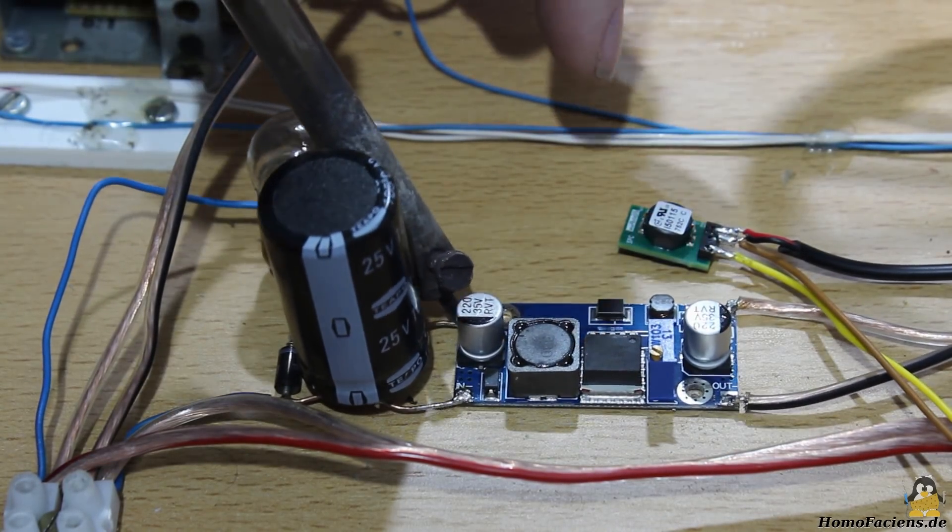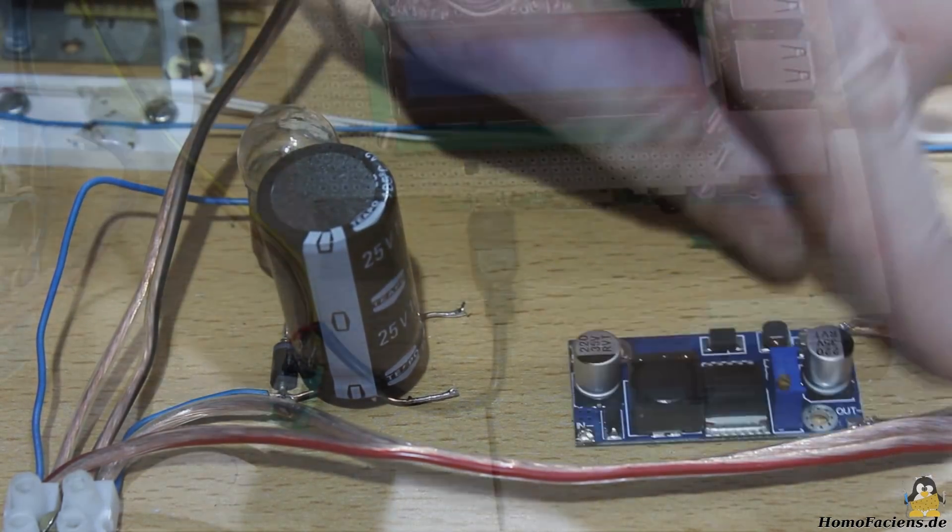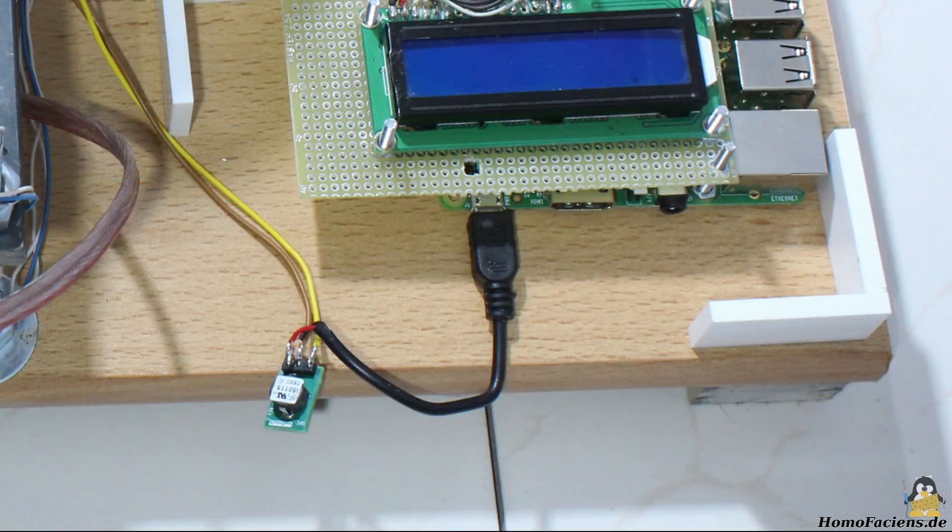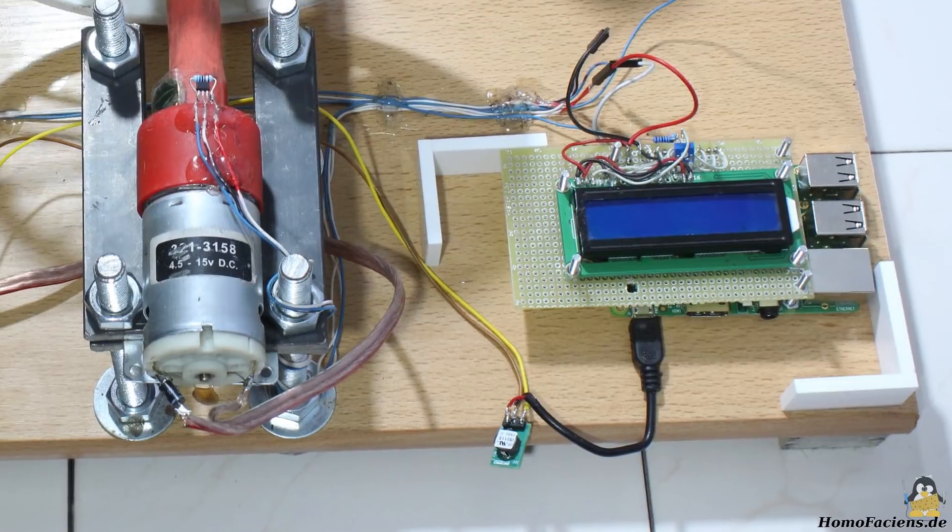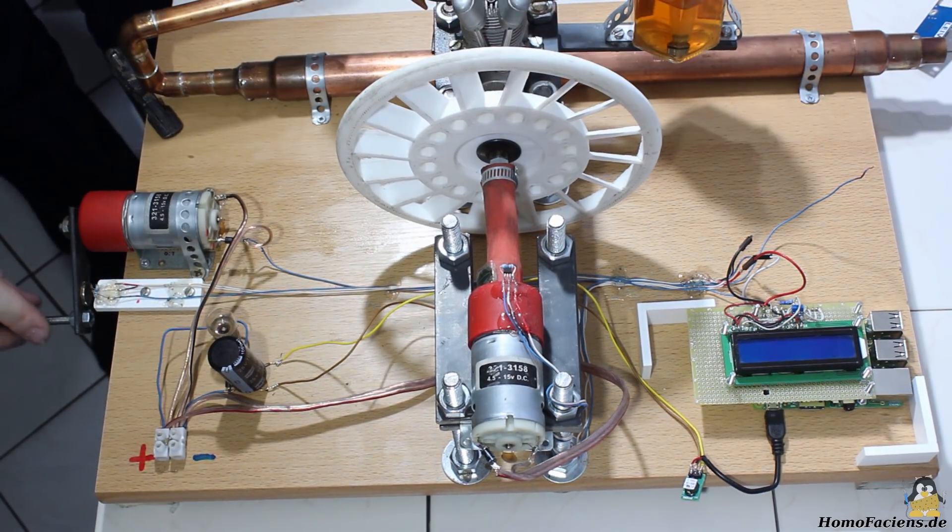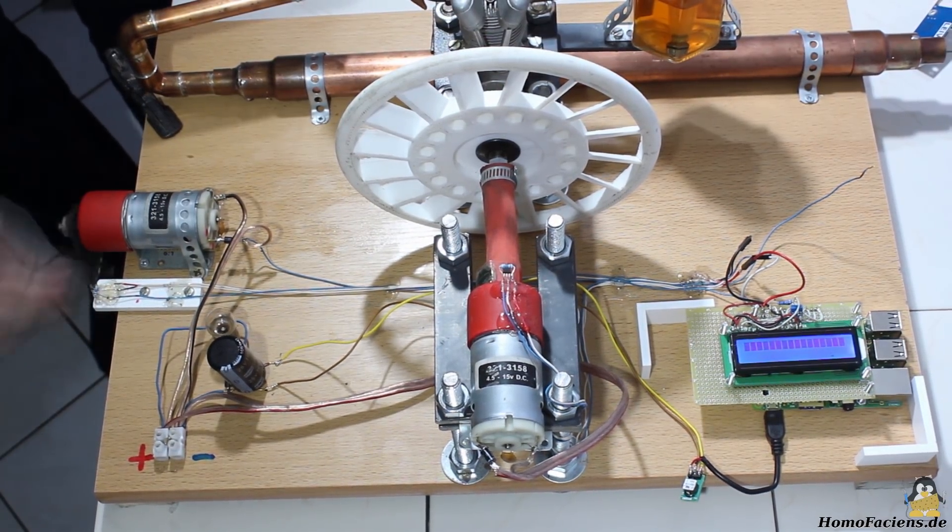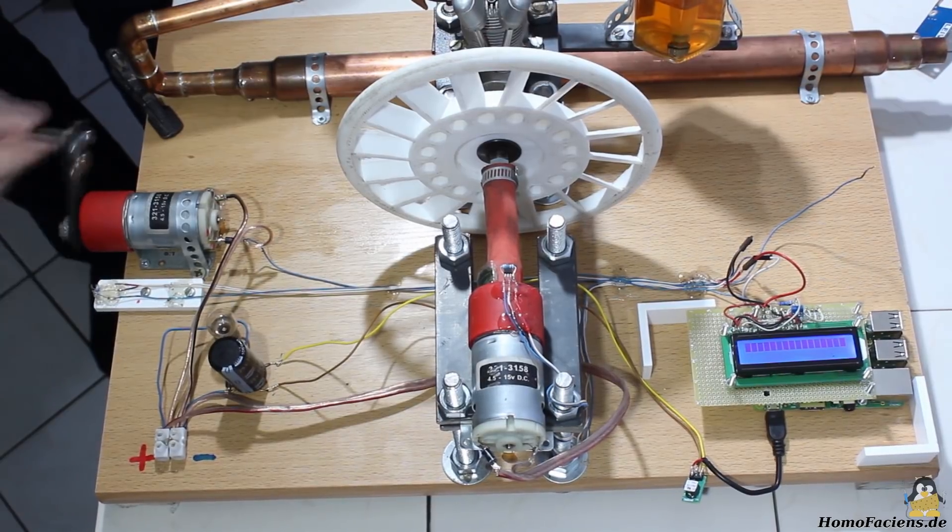Now I'm replacing the step-up converter with the 5V step-down converter to power the Raspberry Pi. To make the step-down converter work, the output of the electric generator must be kept above 5V.